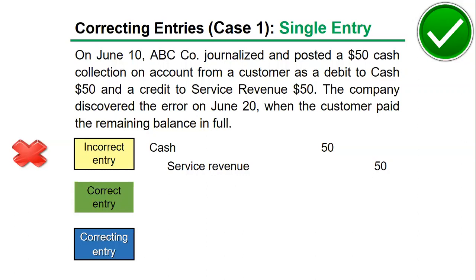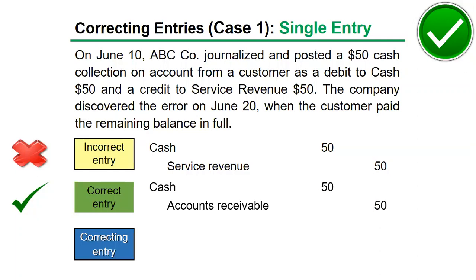It's incorrect because it shouldn't be service revenue credit, since it's a collection on account. This means accounts receivable decreased, and accounts receivable decreases by a credit. So the correct entry has cash as debit — that part is correct — however, service revenue is incorrect and it should be accounts receivable credit. You can see the incorrect entry and the correct entry side by side, and the correcting entry, when combined with the incorrect entry, will lead to the correct entry.